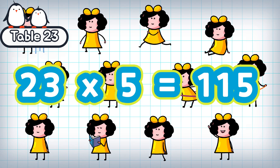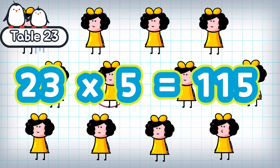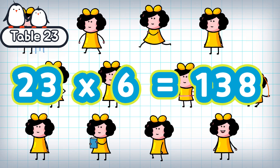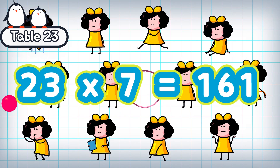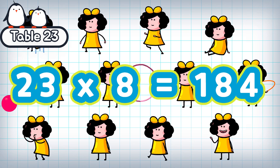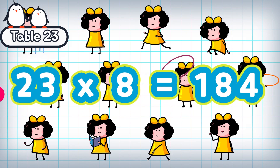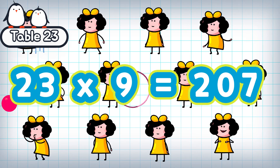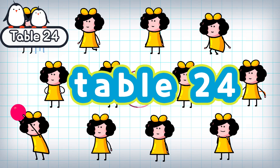23 times 5 is 115. 23 times 6 is 138. 23 times 7 is 161. 23 times 8 is 184. 23 times 9 is 207. Table 24.